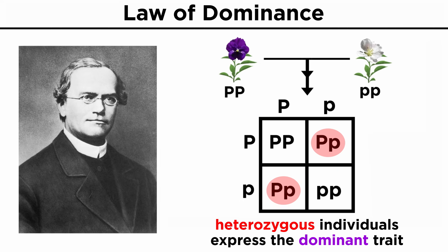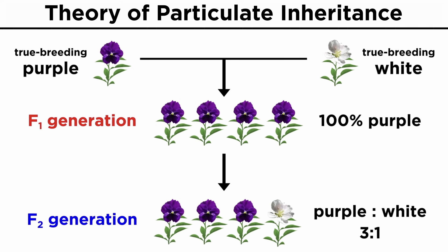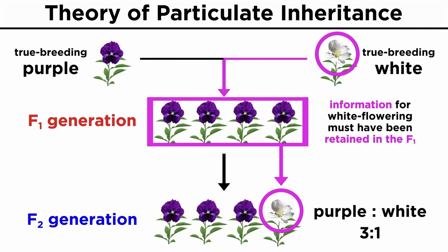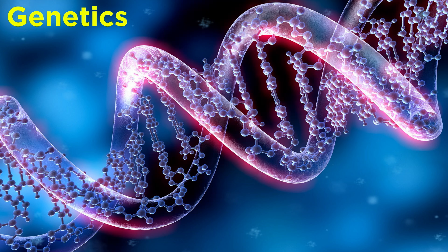The law of dominance states that in a heterozygote, one trait will conceal the presence of another trait for the same characteristic. These laws came about by experimentation to explain Mendel's theory of particulate inheritance, that phenotypic traits can be passed from generation to generation through discrete particles known as genes, which can keep their ability to be expressed while not always appearing in a descending generation. These ideas form the foundation of genetics, and thus how organisms can change over time.